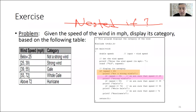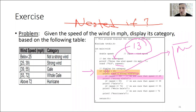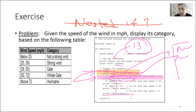Let's check if the output is still correct. Assume we enter speed as 13. The first condition: is 13 less than 25? Yes — so we print 'not a strong wind.' But since there is no else, we continue. Is 13 less than 39? Yes — so we print that category too. It goes through all statements printing all categories, so the code is not correct.